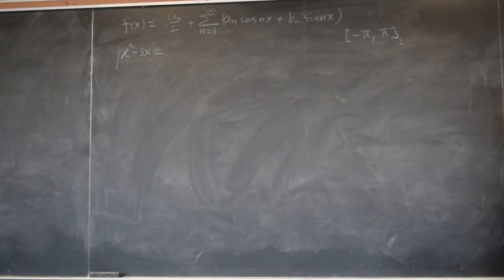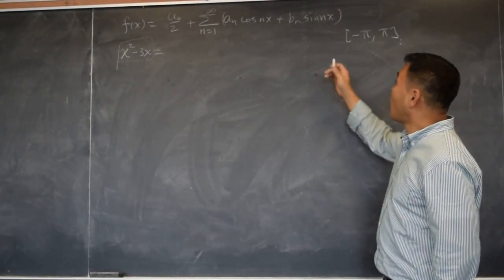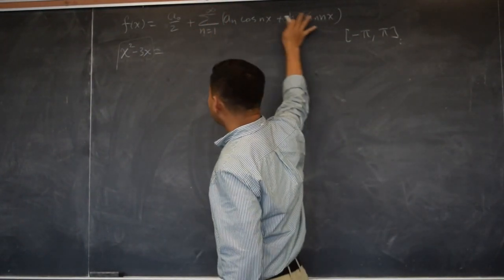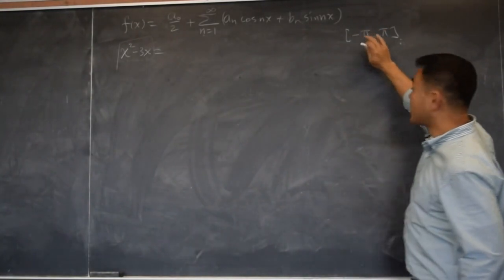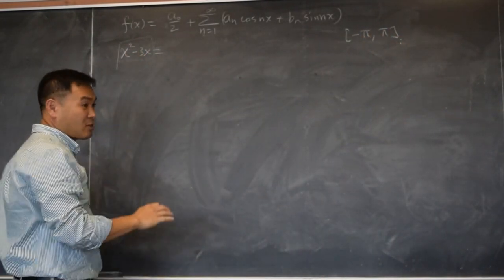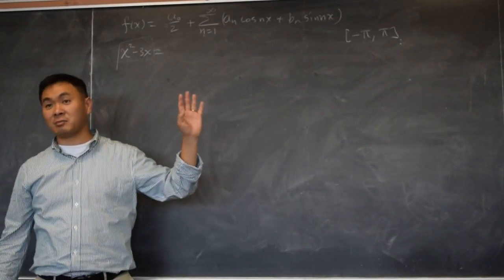Now, the significance of that is that if you drew the graph of the right side with n from 1 through 1,000 or something over the interval of negative pi to pi, and compared with the graph of this thing, you'll see that the two graphs are almost exactly matching.